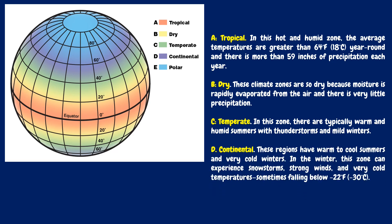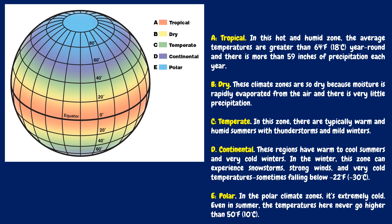Continental — these regions have warm to cool summers and very cold winters. In the winter, this zone can experience snowstorms, strong winds, and very cold temperatures, sometimes falling below -22 degrees Fahrenheit or -30 degrees Celsius. And lastly, Polar — in the polar climate zones, it's extremely cold. Even in summer, temperatures here never go higher than 50 degrees Fahrenheit or 10 degrees Celsius.